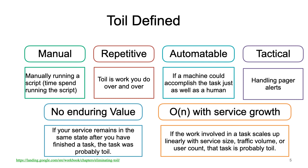Automatable — if you are able to get that accomplished through a machine, yes, that is toil. Tactical — handling pager alerts. No enduring value — if your service remains in the same state after you have finished your task. Or if it linearly grows in scale, size, traffic, volume, or user count — that is also toil.